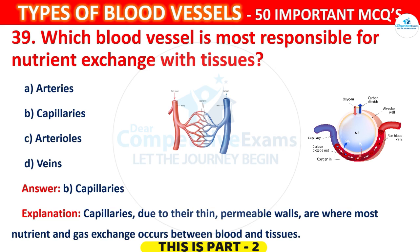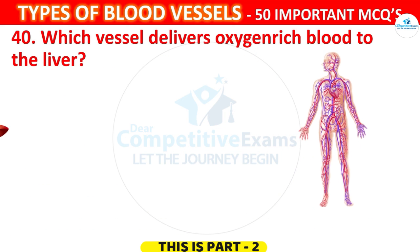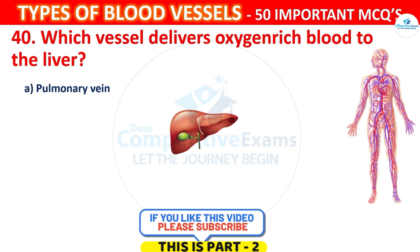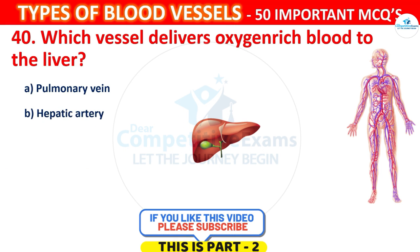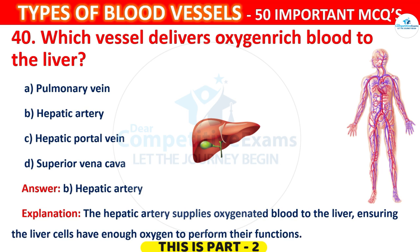Question 40. Which vessel delivers oxygen-rich blood to the liver? The options are: Pulmonary vein, Hepatic artery, Hepatic portal vein, or Superior Vena Cava. The correct answer is B, the Hepatic artery. The Hepatic artery supplies oxygenated blood to the liver, ensuring liver cells have enough oxygen to perform their functions.